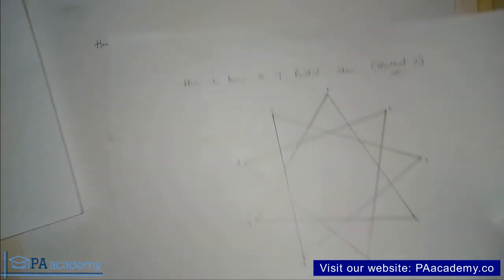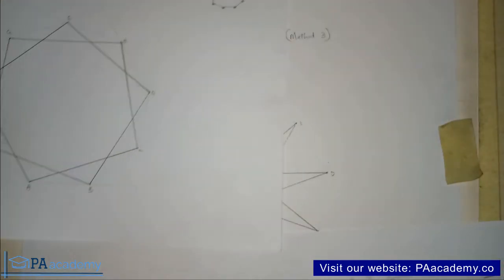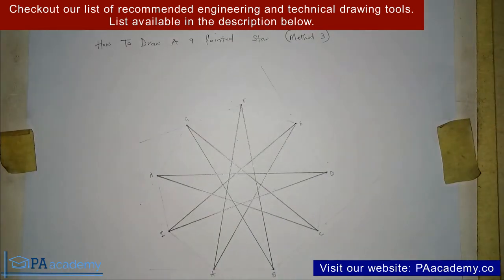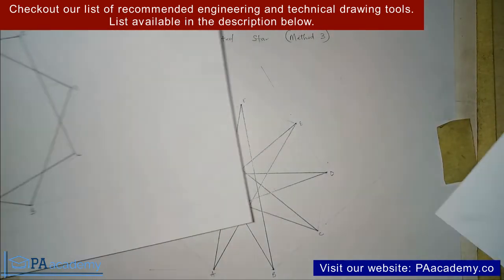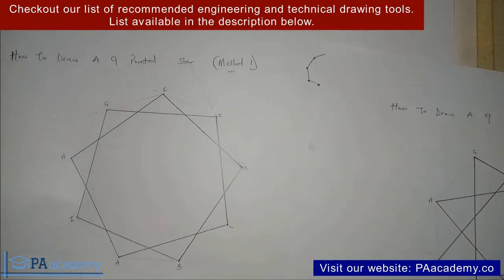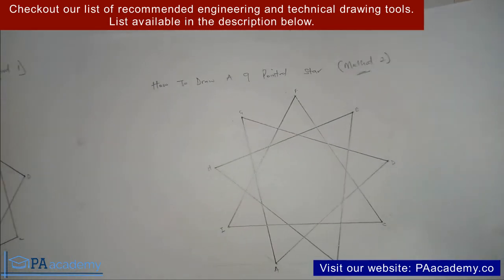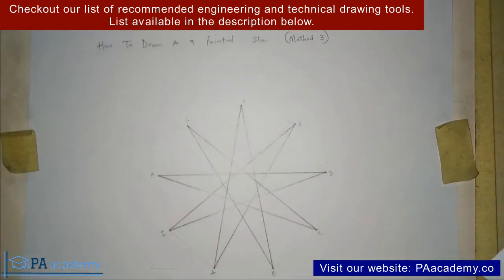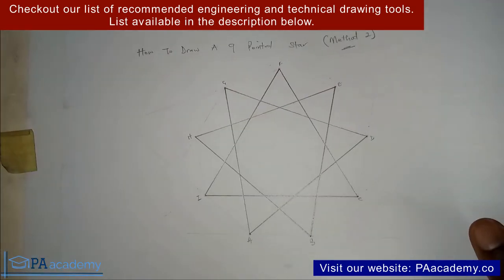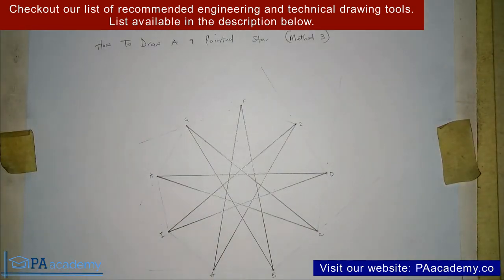Let me know what you notice in all these three. This is method one, this is method two, and what you are having here is method three. What's the difference? What did you notice? Let me know what you think about these three methods in the comment section below. Which method do you think looks more like a nine-pointed star? Is it method one, method two, or method three? I want to see your comments in the comment section below.